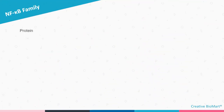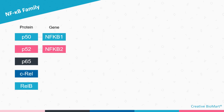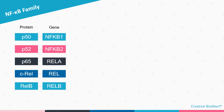Secondly, the NF-Kappa-B protein family. The NF-Kappa-B protein family consists of 5 members: protein 50, protein 52, protein 65, CRL, and RL-B. They are encoded by the NF-KB1, NF-KB2, RL-A, RL, and RL-B genes respectively.